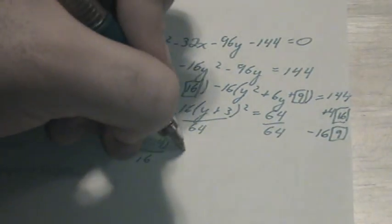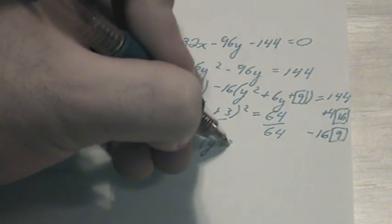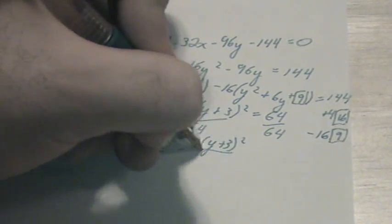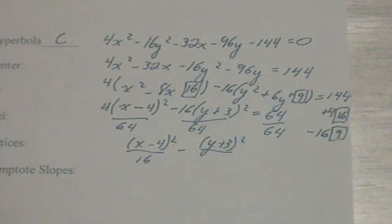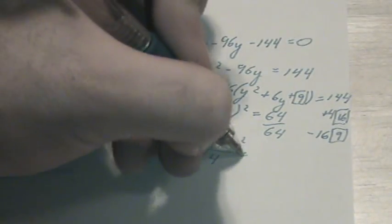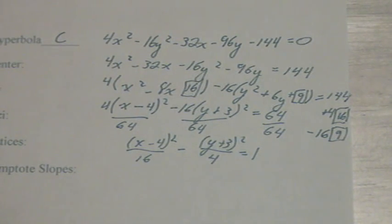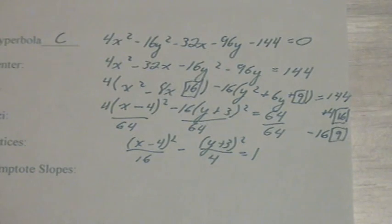minus y plus 3 squared over 4, since 16 divided by 64 is 4, equals 1. And we now have a hyperbola in standard form.